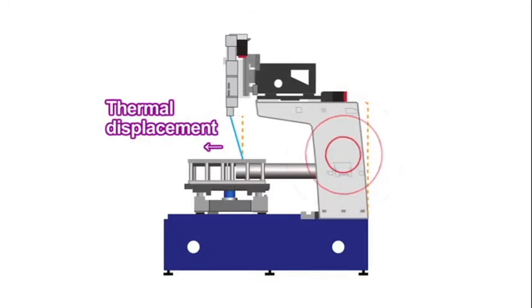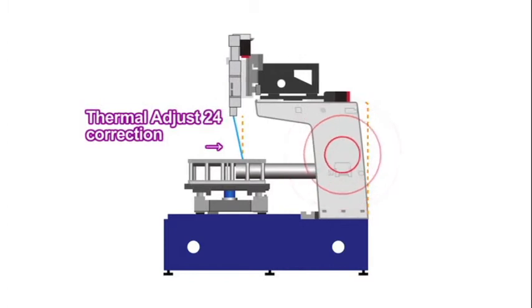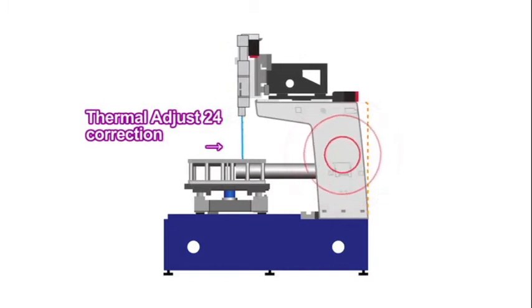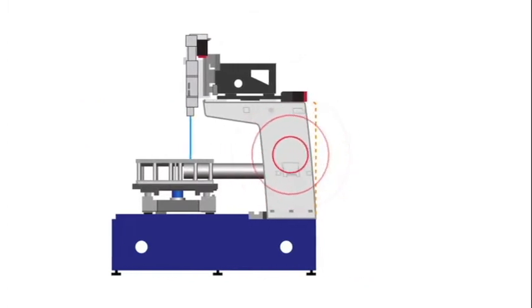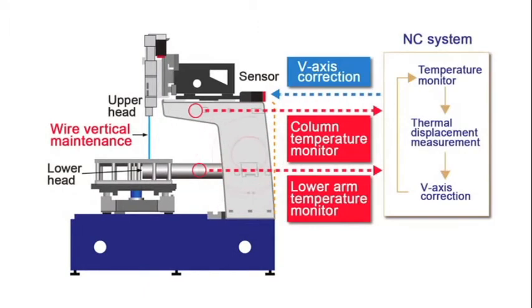Thermal Adjust 24 monitors the temperatures of the column and lower arm, using this data to estimate thermal displacement in the upper and lower heads that support the wire. Automatic adjustment maintains vertical precision even through continuous manufacturing.